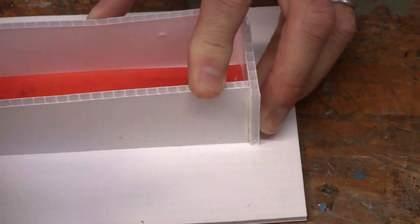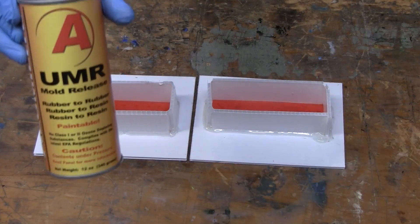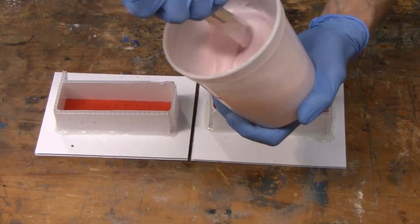Now we simply make mold boxes, seal them, mix up our silicone, and pour the two individual parts.